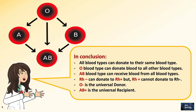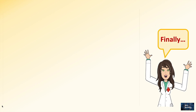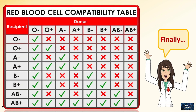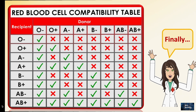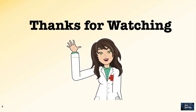Taking into consideration Rh negative and Rh positive, O negative is the universal donor and AB positive is the universal recipient. Finally, all information has been summarized in a red blood cell compatibility table for all eight blood groups. Thanks for watching.